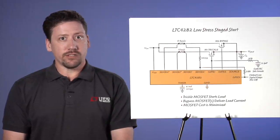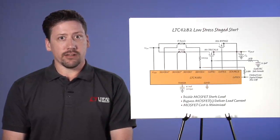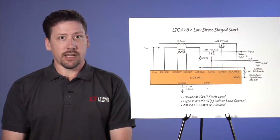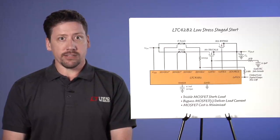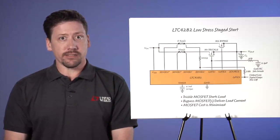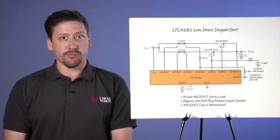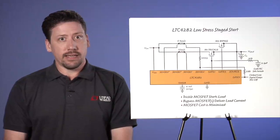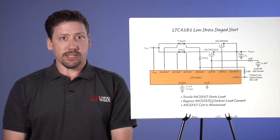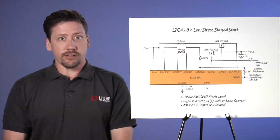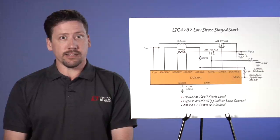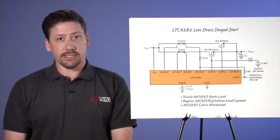The LTC4282 is also capable of two types of staged architectures where the RDS(on) and power dissipation requirements of the hot swap function are separated into two groups of MOSFETs. Each group of MOSFETs is optimized to one purpose rather than trying to find a single MOSFET which has performance on several often conflicting criteria.